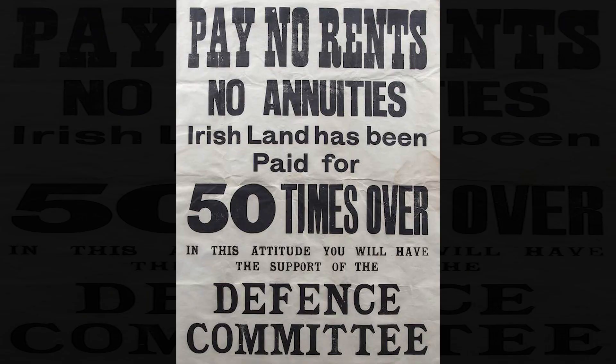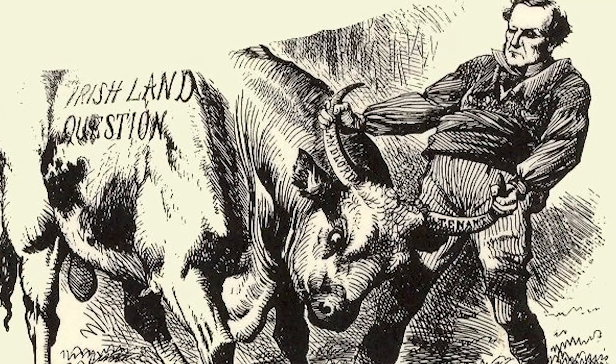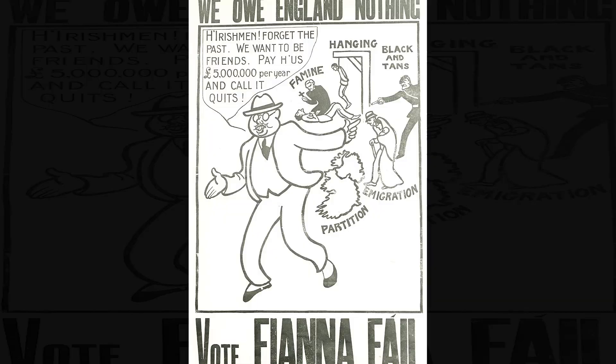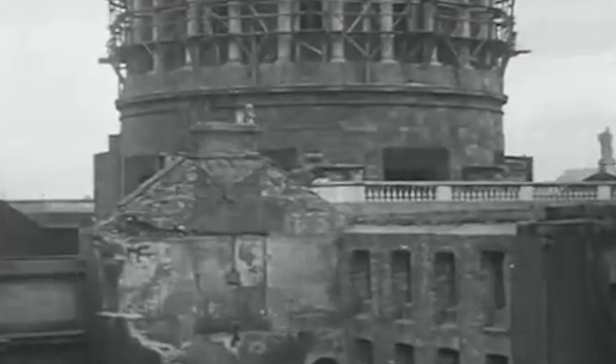The government sought to end their repayment to Britain of land annuities. These originated from government loans granted to Irish farmers by the Land Commission from the 1880s, which had enabled farmers to purchase lands from their former landlords. The previous government had agreed that Ireland would continue to pay these debts every year to the UK. Two years after that agreement was made, another one exempted the free state from the public debt in the UK, and this is where the disagreement came from. De Valera argued that the land annuities were part of the public debt, and no longer the responsibility of his government to pay.